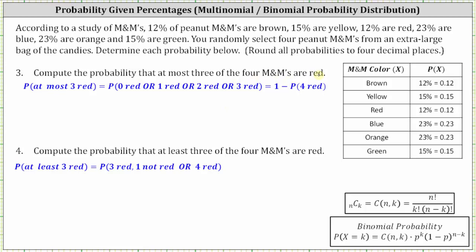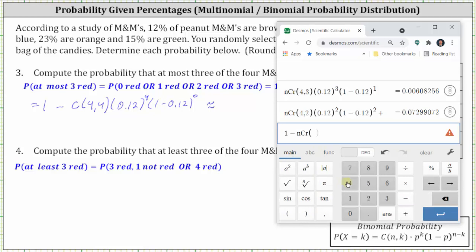For number three, compute the probability that at most three of the four M&Ms are red. At most three red means zero, one, two, or three red — which would be a lot of work to determine directly. The only outcome missing is four red, so we can find this as one minus the probability of four red. The probability of four red is four choose four times 0.12 to the fourth power, times one minus 0.12 to the zero power. Therefore, the probability of at most three red equals one minus that value, which to four decimal places is 0.9998.